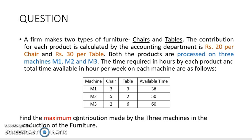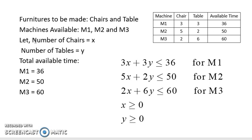In this question I need to maximize the contribution made by machines M1, M2, and M3 for producing the furniture. First, I need to decide my decision variables. Any company manufacturing some commodities — those objects will be considered as the decision variables, and the number of those objects will be the decision variable. Therefore, let the number of chairs be x and the number of tables be y. Because the firm produces only two types of furniture, I have only two decision variables. If there were a showcase or cupboard, that would be a third variable z.